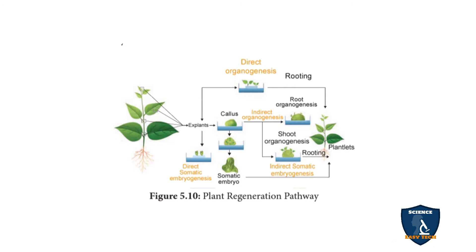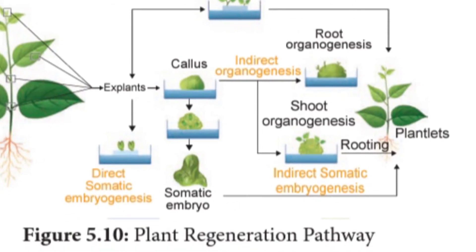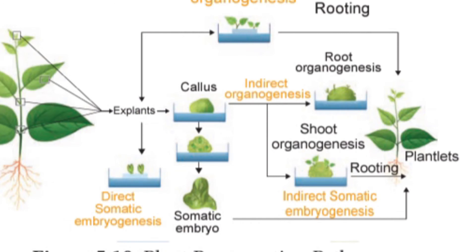The plant regeneration pathway: from the plant parts — that is, leaves, buds — these are the explant. The bud region, the nodal region, and the leaf are all acting as the explant. From the explant, you can see the callus. The callus gives rise to the somatic embryo because they are taken from the vegetative parts — the body cells only; they are not using germ cells. So somatic embryos are formed here. This somatic embryo leads to the formation of new plantlets.